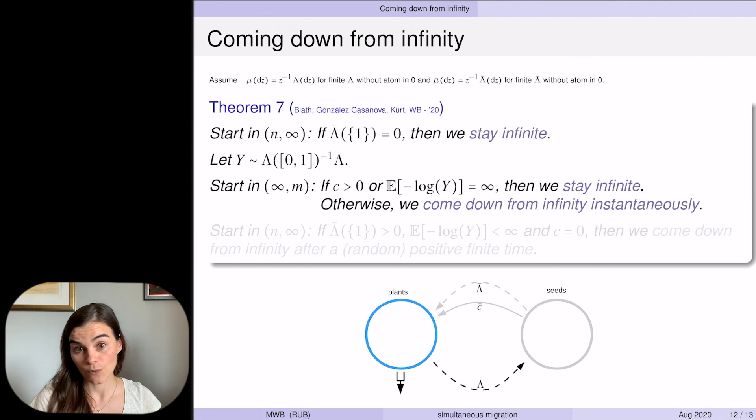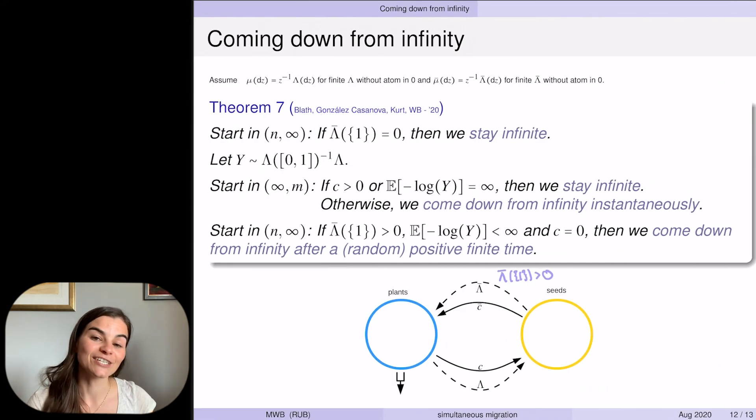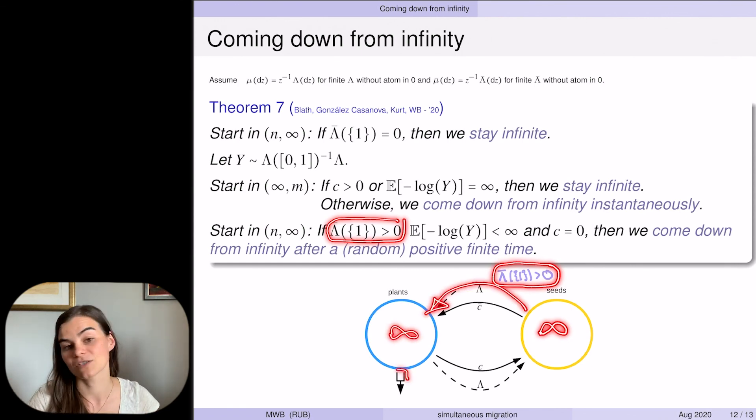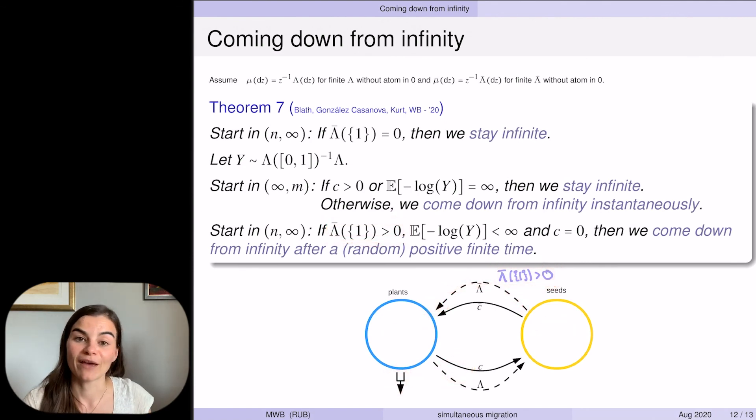However, if it is too slow, then Kingman brings us down from infinity. Then you have the last curious case where you might have the migration with an atom in one, and so that one would just empty the whole seed bank after a random time. Then if Kingman is faster than whatever migration mechanism you still have, that will bring you down from infinity after a random time.